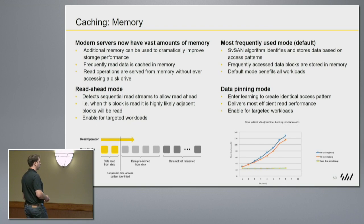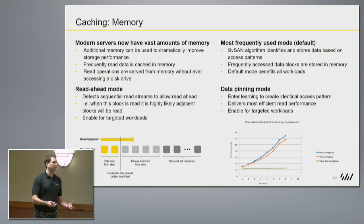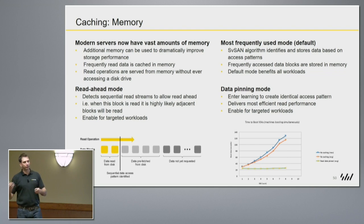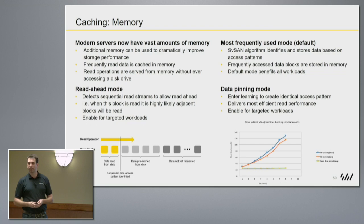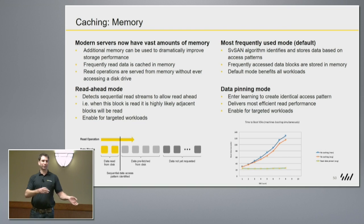In our memory caching we have a number of options you can leverage. From the outset we use something I refer to as most frequently used — it's a bit more intelligent than that. On a block level on the underlying disk, the more frequently a block is accessed, the bigger it becomes as a candidate to move up into the memory tier. So frequently accessed data will evolve up into memory and benefit from the read speeds and low latency. Incidentally, memory caching is read only, because memory is volatile — if we lose the server, we lose our writes and we'd be in a bad place.